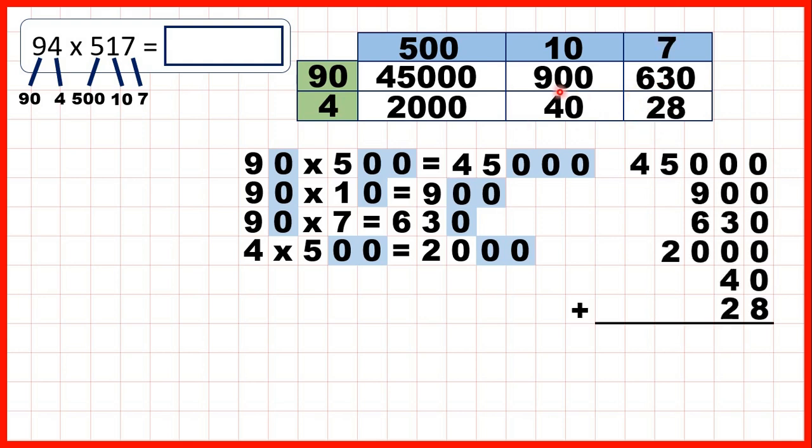So now we just need to add up the numbers that are on our grid. And to do that we can use column addition. When we do that, we get our answer: 48,598.